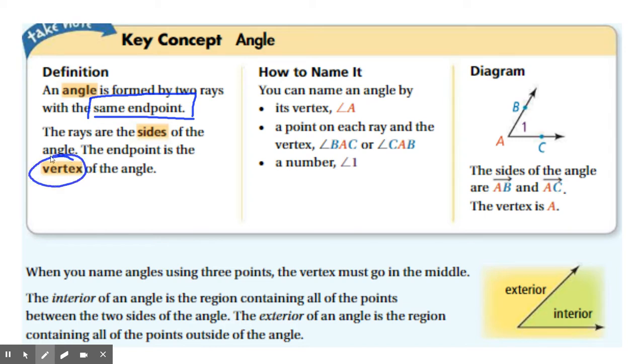The vertex is very, very, very important for an angle. So the sides are the rays, but the vertex is where those rays meet.